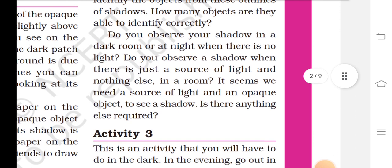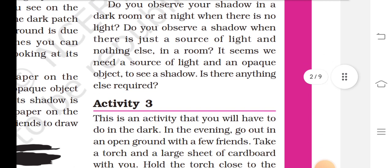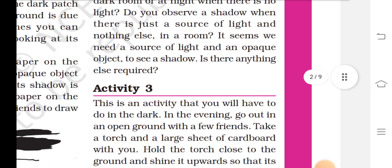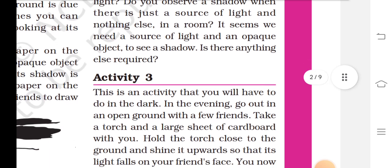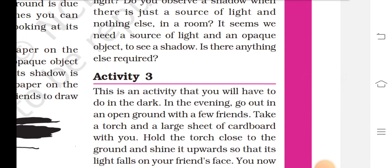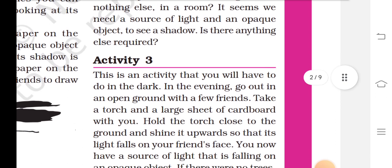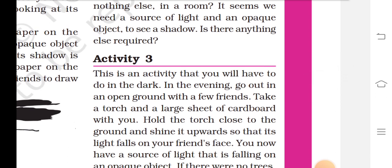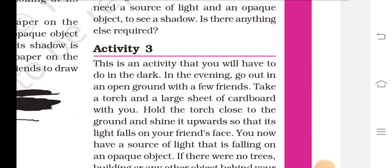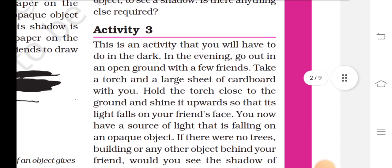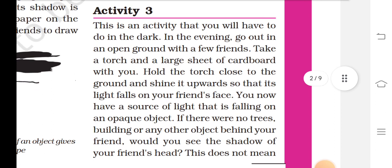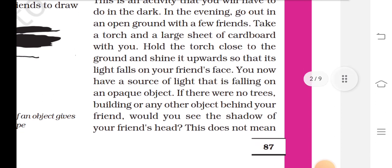Draw outlines of the shadows of other objects in a similar way. Now ask some other friends to identify the objects from the outlines of shadows. How many objects are they able to identify correctly? Do you observe your shadow in a dark room or at night when there is no light? Do you observe a shadow when there is just a source of light and nothing else in a room? It seems we need a source of light and an object to see a shadow. Is there anything else required?